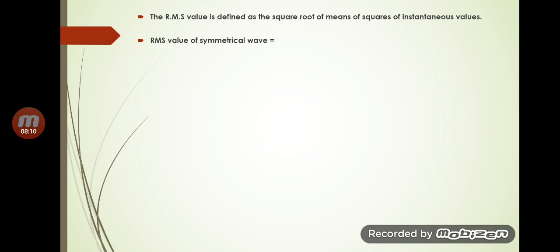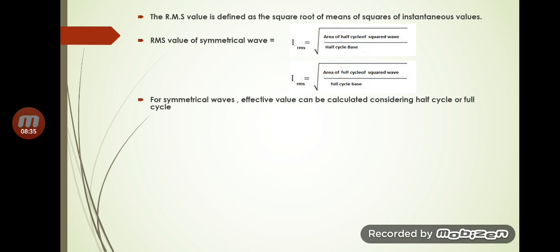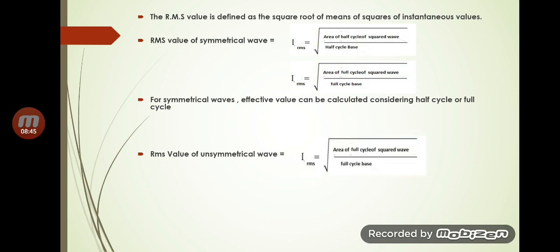The RMS value of a symmetrical wave is: IRMS equals the square root of the area of the half-cycle squared wave divided by the half-cycle base. Alternatively, you can use the full cycle: area of the full cycle of the squared wave divided by the full cycle base. For an unsymmetrical wave, the RMS value considers the complete cycle, so IRMS equals the square root of the area of the full cycle of the squared wave divided by the full cycle base.